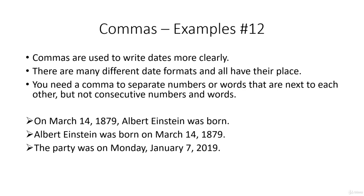So between Monday and January, but they're both words, we have a comma. Between the 7 and the 2019, they're both numbers, there's a comma, but there isn't one between the January and the 7. Or if we write it this way, the party was on 7th January 2019, we have number, word, number, no commas needed at all.